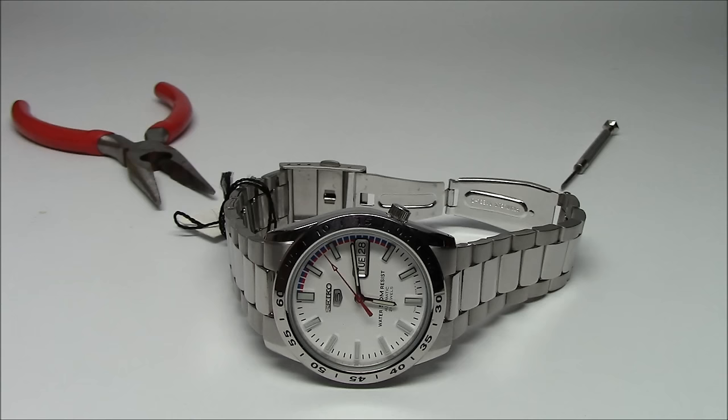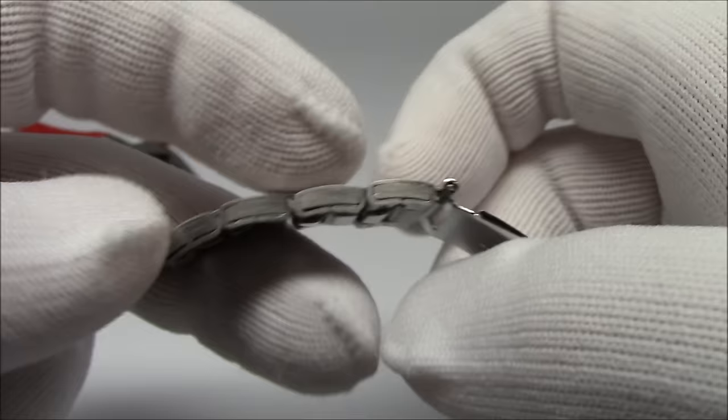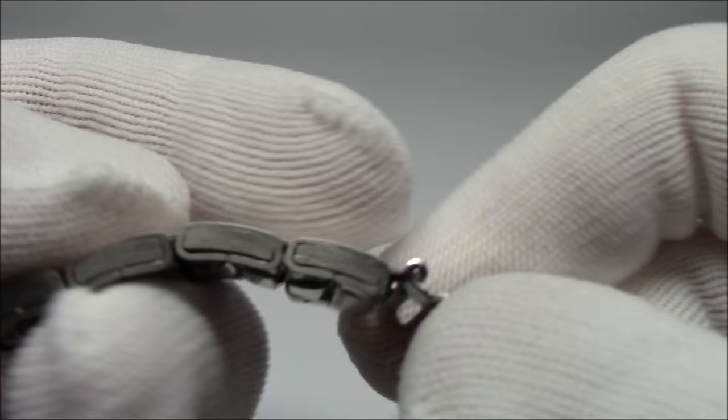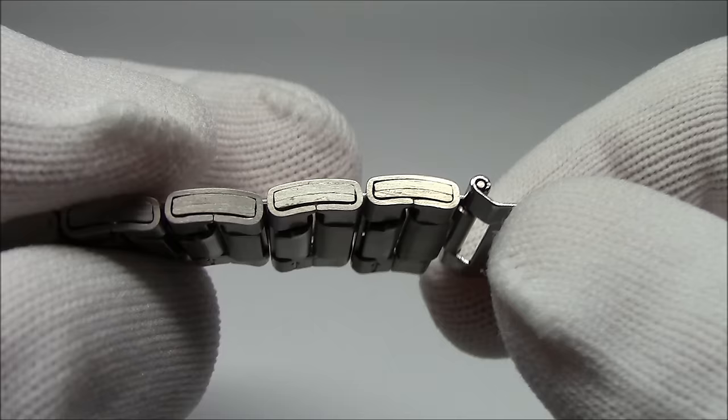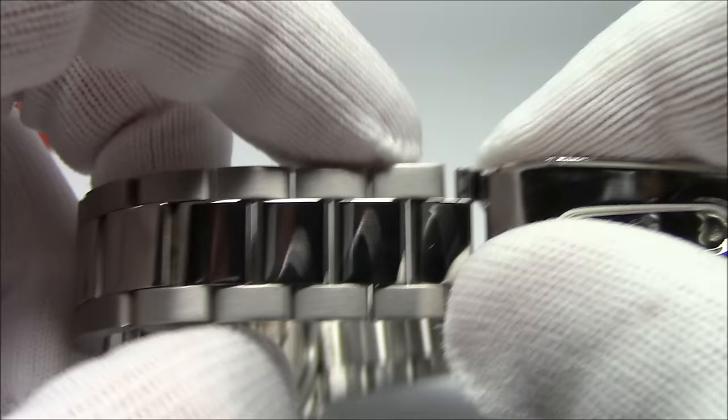So in front of you have a Seiko 5 watch with the folded link bracelet that we'll be sizing today. How do we know it's folded links? It's pretty simple. When you look at the bracelet from the side and you look at the individual links, you can see that they're not solid. See they're folded over? It's basically a piece of sheet metal that's folded onto itself and then there's a core, and that core more or less is the removable pin. When you look at one side, you see that. Look at the other side, you see a very similar thing. But again, like all the other bracelets that we've sized, everything goes in one direction only.